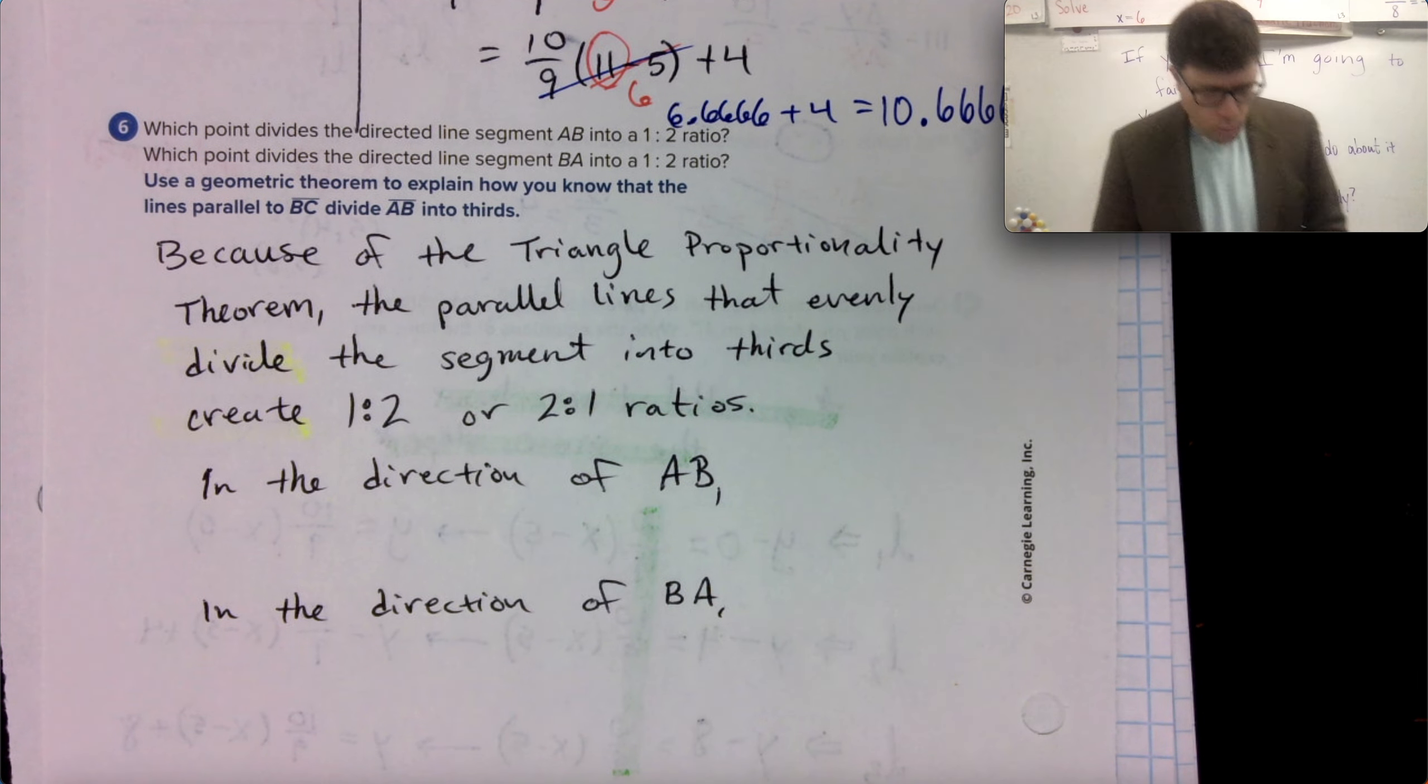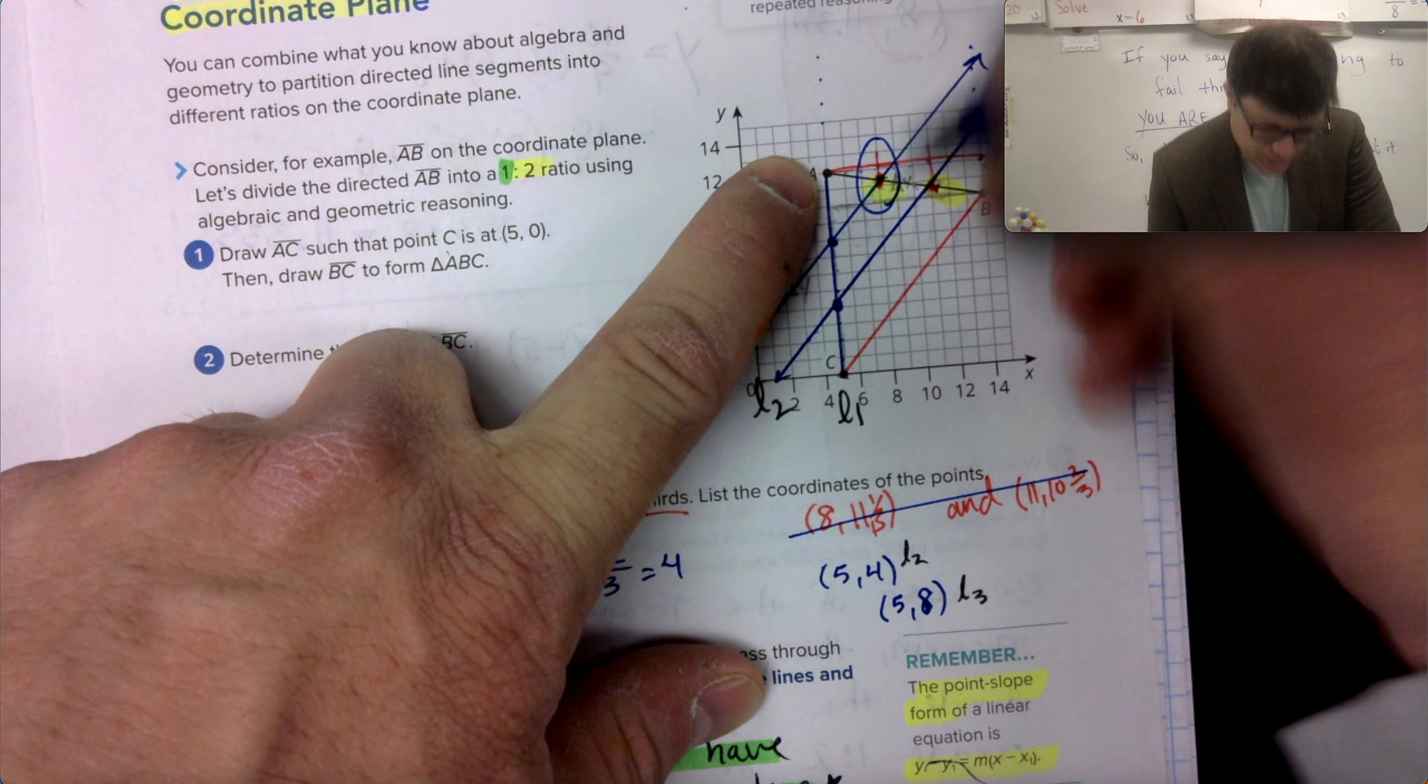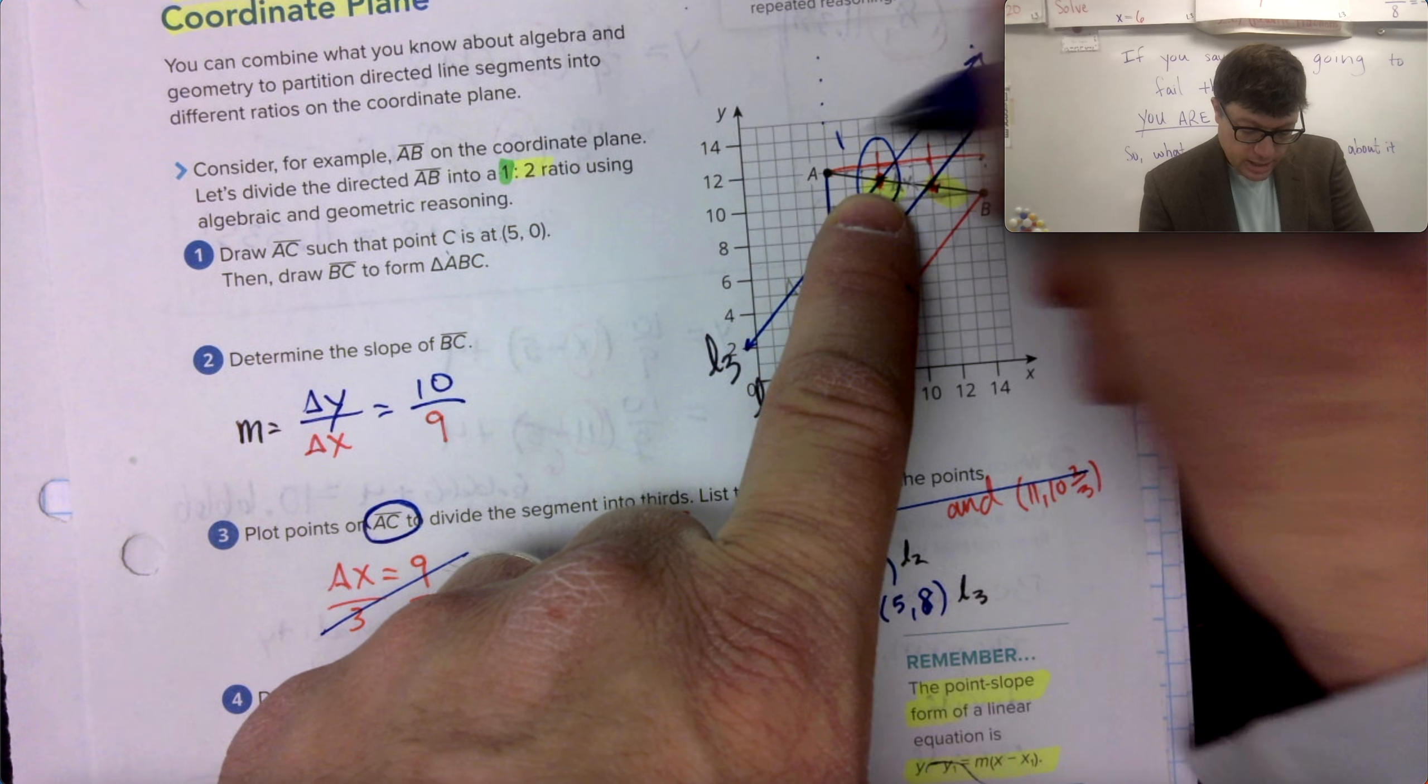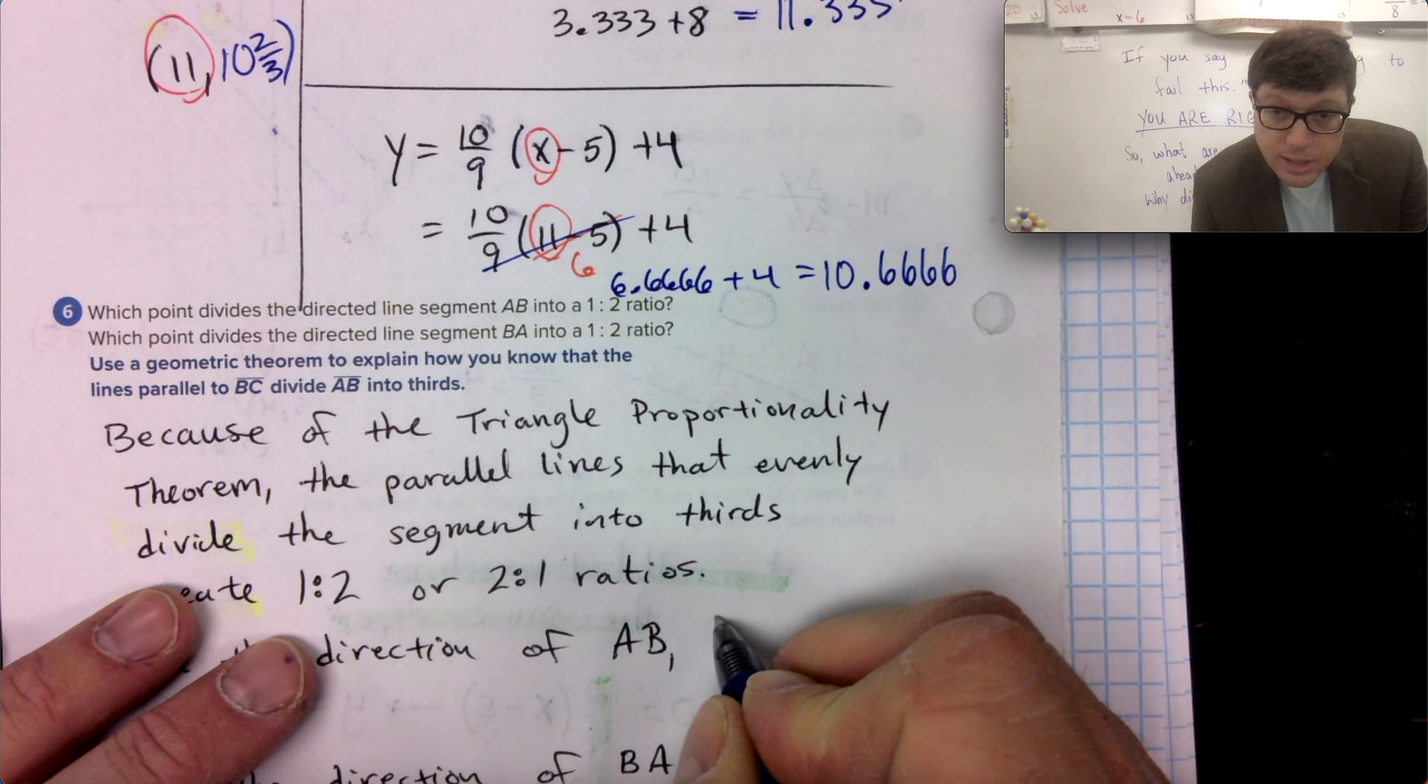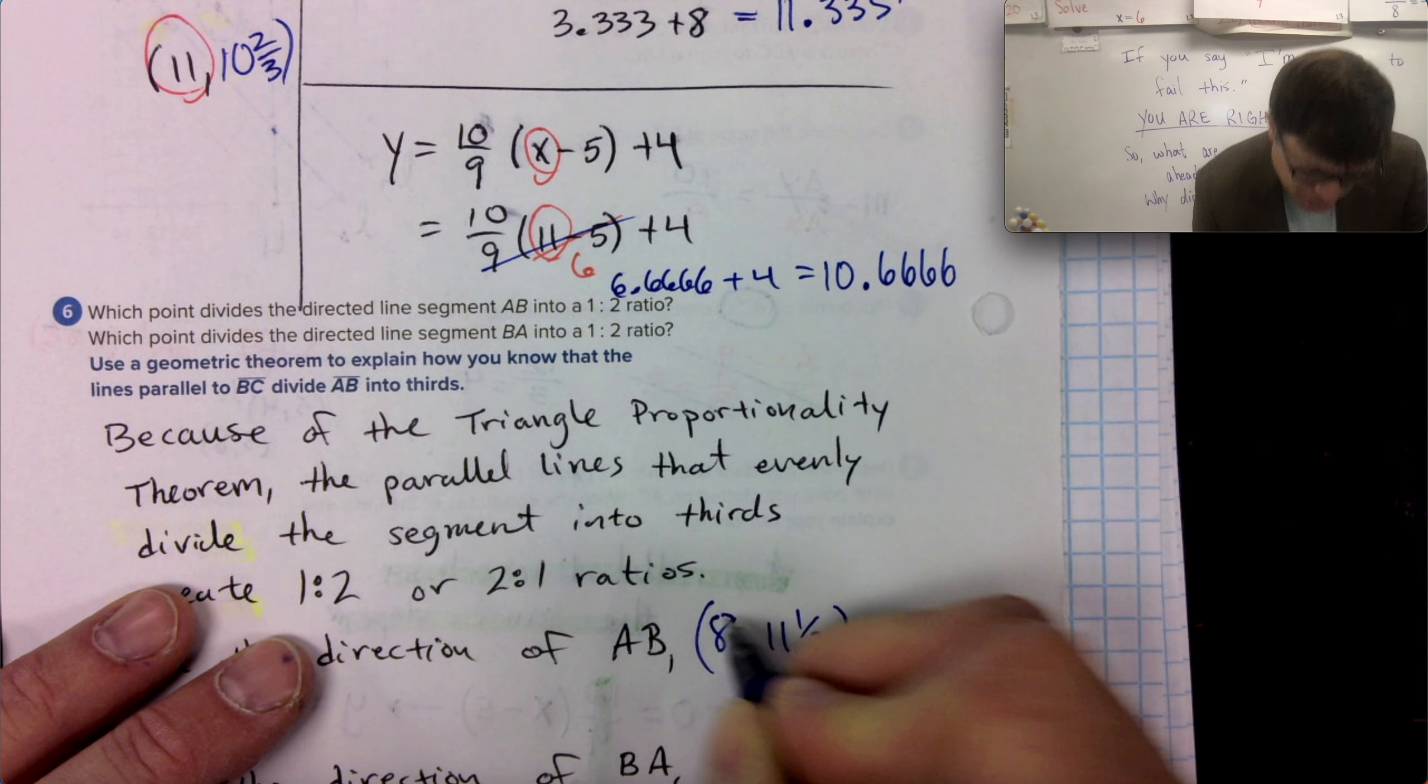Which point is that? Well, in the direction of AB, so from A to B, this coordinate is going to cut that ratio, that segment into a one to two ratio. So that's the coordinate eight comma 11 thirds, eight comma 11 and one third. My apologies. I said it again.